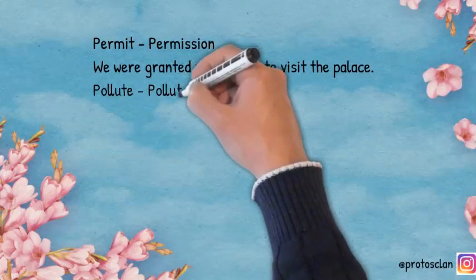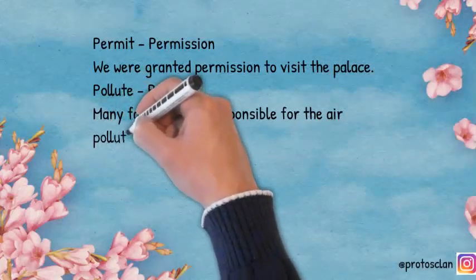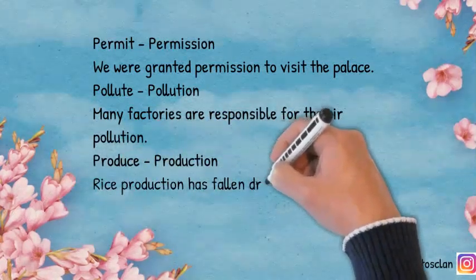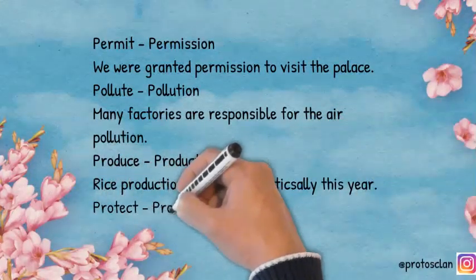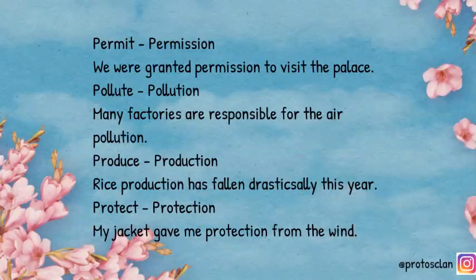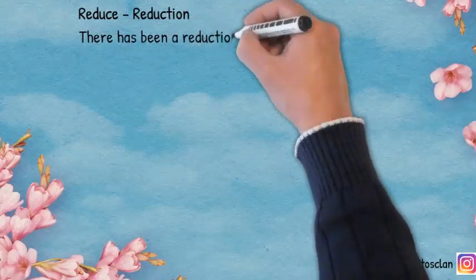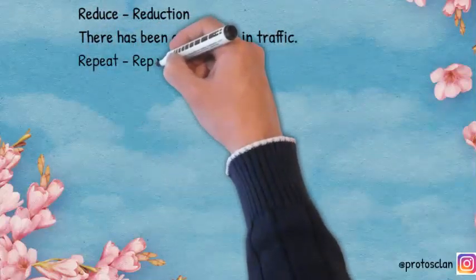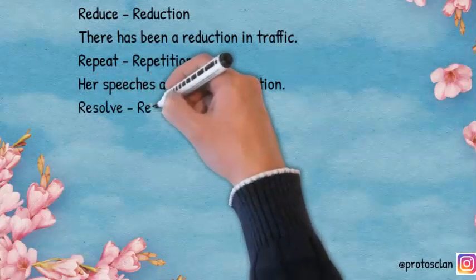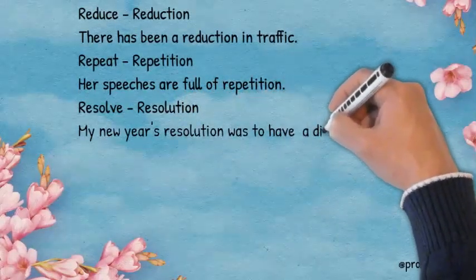Pollute — Pollution: Many factories are responsible for air pollution. Produce — Production: Rice production has fallen drastically this year. Protect — Protection: My jacket gave me protection from the wind. Reduce — Reduction: There has been a reduction in traffic. Repeat — Repetition: Her speeches are full of repetition. Resolve — Resolution: My New Year's resolution was to have a disciplined routine.